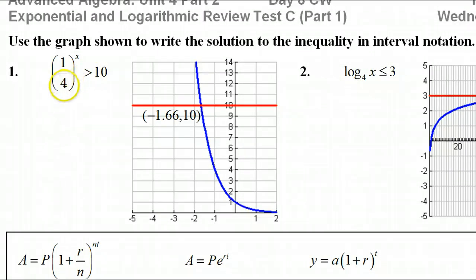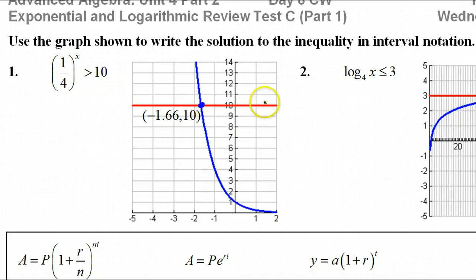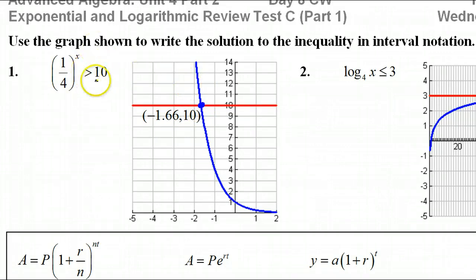We've worked with solving inequalities with exponential and logarithmic functions, but if I actually give you the graph, it's even easier than what we've learned before. I'm giving you the breaking point right here. We want to know for which x values make the function greater than 10. This red line represents 10, and right here is where the two are equal. This dot represents x equals negative 1.66 — this is where the function equals 10. When we say greater than, are we thinking above or below? Hopefully you said above.